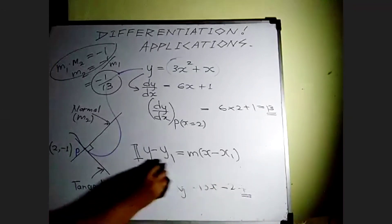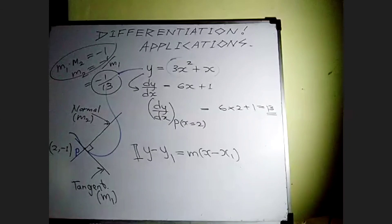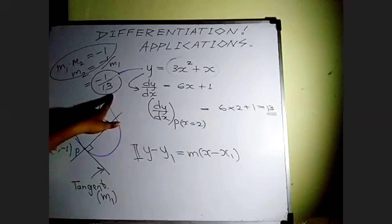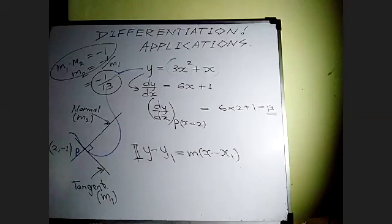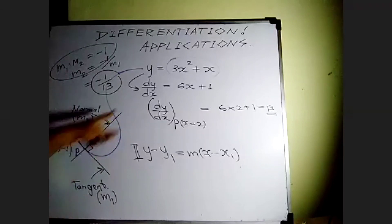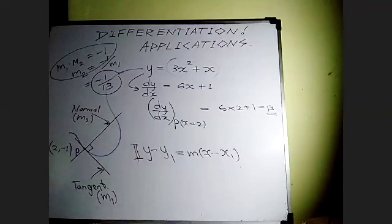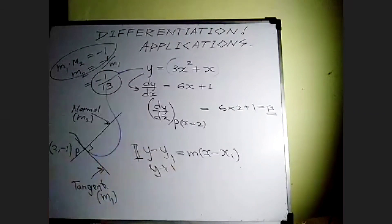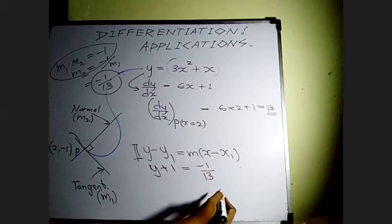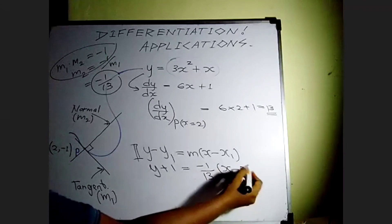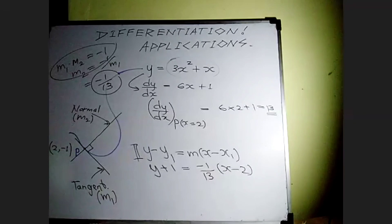Using the gradient −1/13 and the point (2, −1) on the normal, we substitute into y − y₁ = m(x − x₁): y + 1 = −(1/13)(x − 2). You can simplify this to find the equation of the normal. After discussing these basics, we will move on to worked examples and then past paper questions.